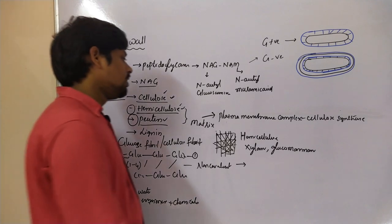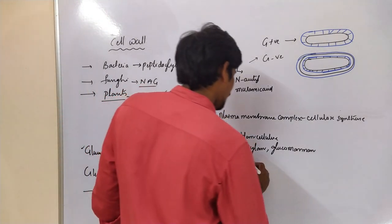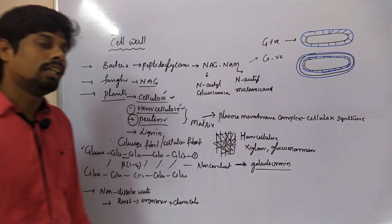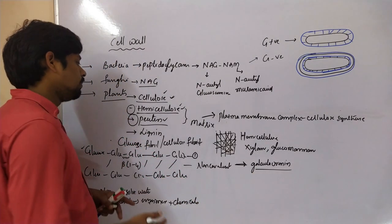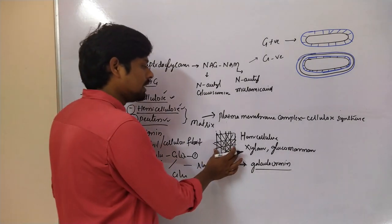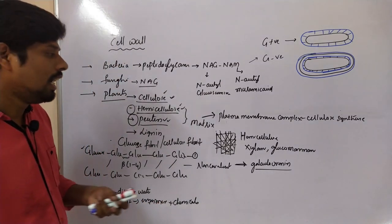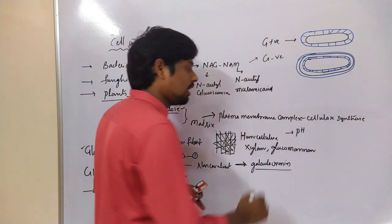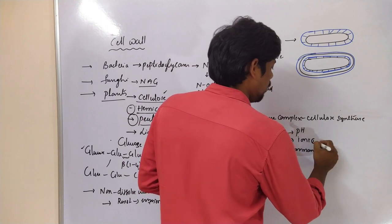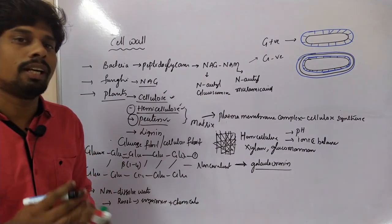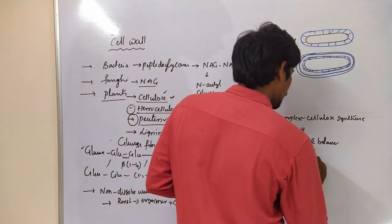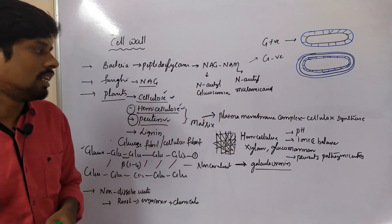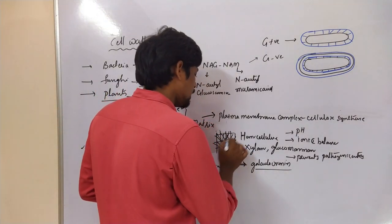Pectin is a polysaccharide made up of galacturonic acid, which forms polymer complexes called pectin. Pectin is also present in the matrix. Pectin is essential for the maintenance of pH of the cell wall, maintains ionic balance across the cell wall and plasma membrane, and prevents pathogenic entry into the cell due to the presence of many crosslinks.